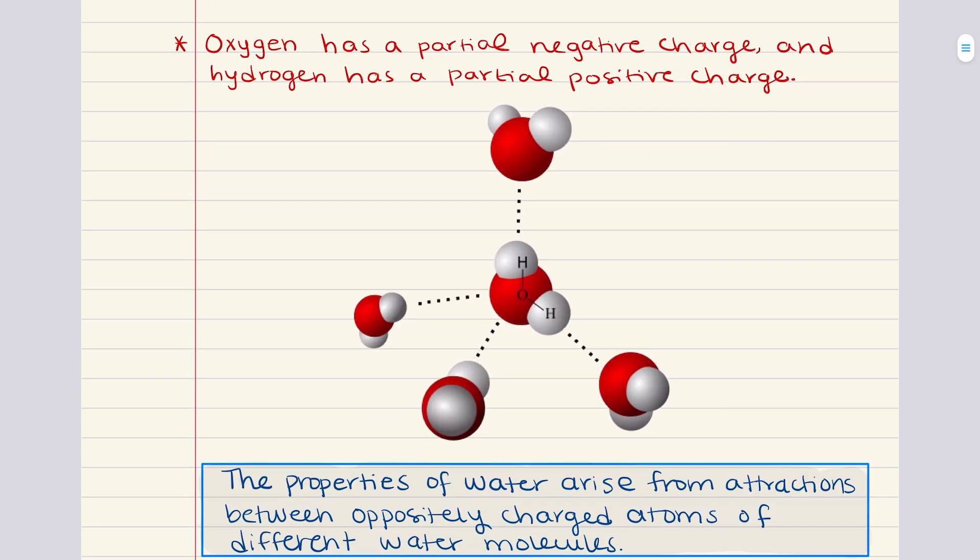Now, water molecules are also known for their strong intermolecular attractions. These attractions occur between the slightly negative oxygen atom of one water molecule and the slightly positive hydrogen atom of another water molecule. And this unique interaction is called hydrogen bonding. This is a type of dipole-dipole attraction. And it is this strong hydrogen bonding that gives water its unique properties such as its high heat capacity and its ability to act as a solvent for many different substances.